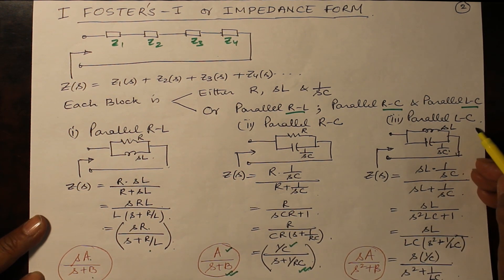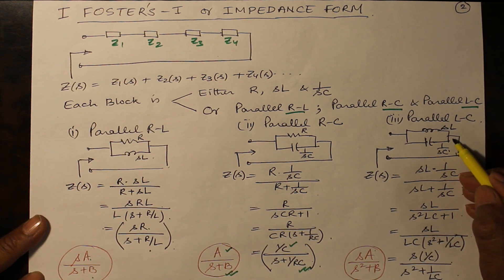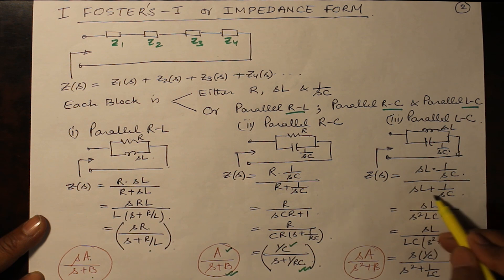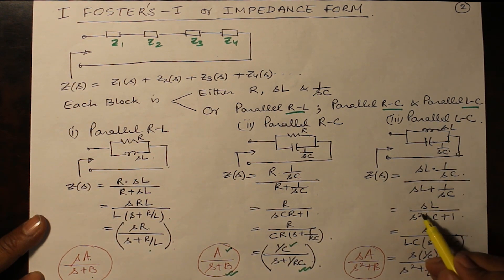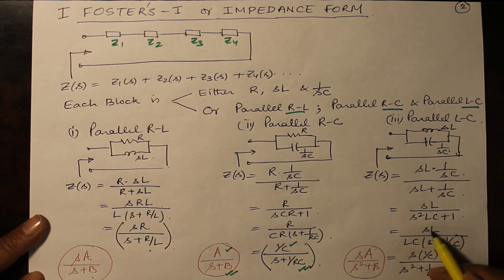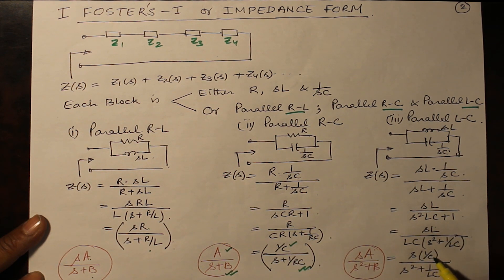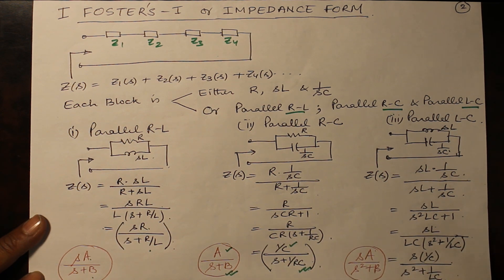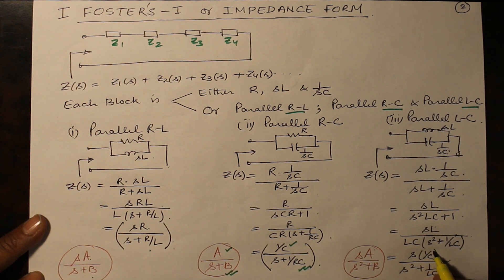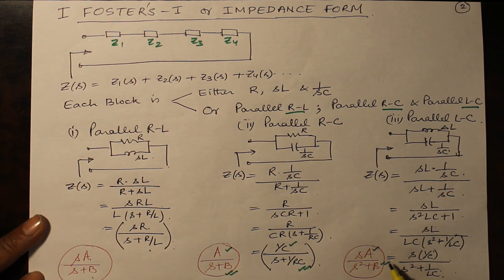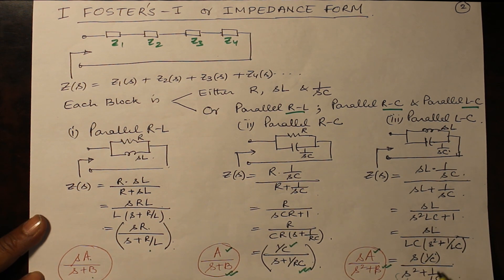For a parallel LC network, SL and 1/SC in parallel gives impedance SL·(1/SC) divided by SL plus 1/SC. SC cancels with SC, giving SL divided by S²LC plus 1. Taking LC out, L cancels and C goes to the numerator, giving (1/C)·S divided by S² plus 1/LC. This is compared to SA/(S² + B), where 1/C equals A and 1/LC equals B, from which C and L can be determined.